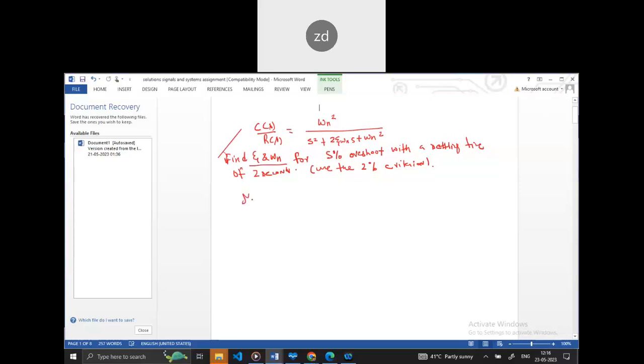So your %Mp, the percentage overshoot, is equal to 5. The formula for %Mp we all know is equal to e^(-πζ) divided by √(1-ζ²).